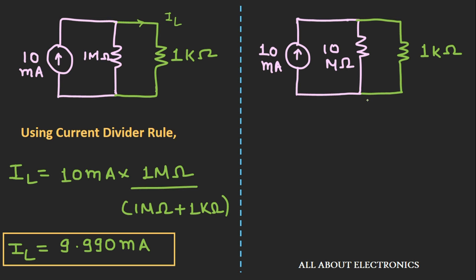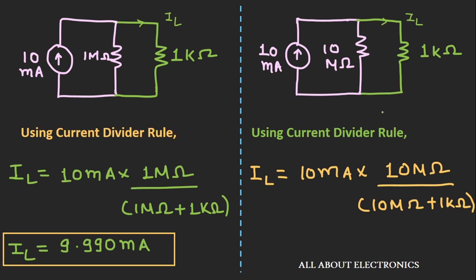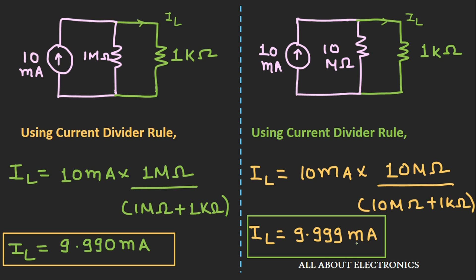In the second case, the current IL flowing through this 1 kΩ resistor will be 9.999 mA. As you can see, as the value of the shunt resistance increases, the leakage current through this shunt resistance reduces, and the amount of current that is flowing through the load resistor will increase. So we can say that the value of the shunt resistance should be as high as possible.